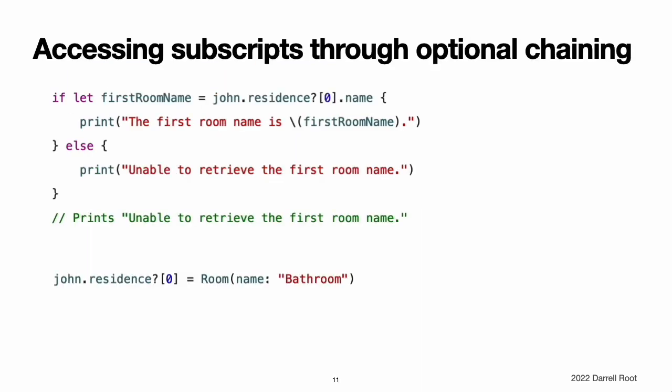Accessing subscripts through optional chaining. You can use optional chaining to try to retrieve and set a value from a subscript on an optional value and to check whether that subscript call is successful. Note: when you access a subscript on an optional value through optional chaining, you place the question mark before the subscript's brackets, not after. The optional chaining question mark always follows immediately after the part of the expression that is optional. This example tries to retrieve the name of the first room in the rooms array of the john.residence property using the subscript defined on the residence class. Because john.residence is currently nil, the subscript call fails.